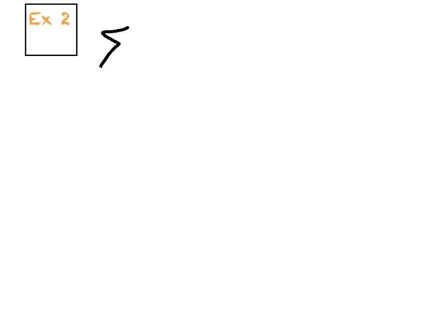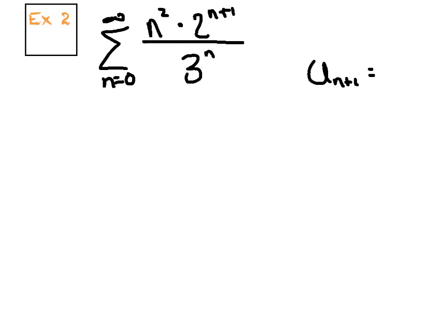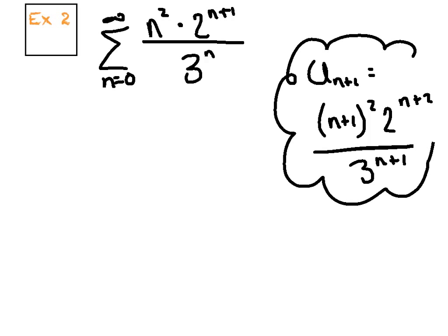Our second example looks a little more intimidating at first glance. We've got n² times 2^(n+1) all over 3^n on the bottom. The nth term is the one sitting right under your nose. I'm going to jump right in and say the (n+1)st term is the quantity (n+1)², 2 to the (n+2) now, all over 3^(n+1). Sometimes I try to write that off on the side before I jump in and start evaluating the limit.